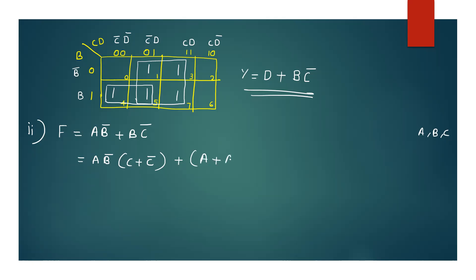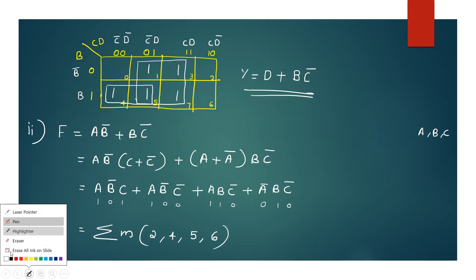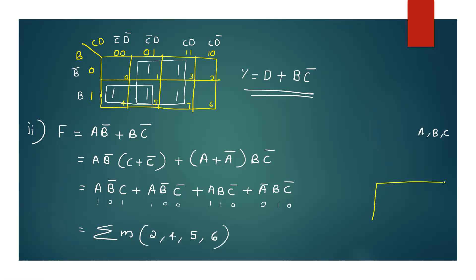For the second expression: f equals a plus a-bar b c-bar. We multiply through using the distributive law: a b-bar c plus a b-bar c-bar. This gives a into bc-bar plus a-bar bc-bar. The corresponding binary values are: 1 0 1, then 1 0 0, then 1 1 0, then 0 1 0. This gives Σm(2, 4, 5, 6).